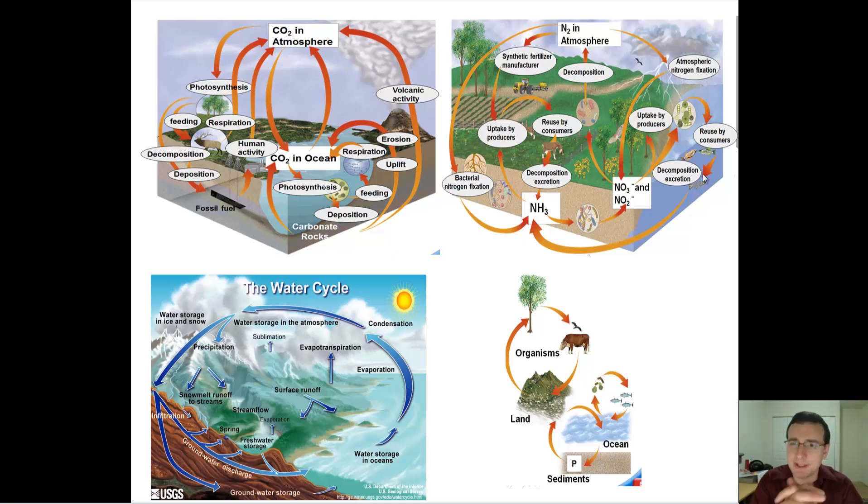Now, one biggest difference between all of these cycles is how fast the nutrients will cycle through these things. Just think about the nature of these areas where the nutrients were going. Remember, the nutrients will be going to the hydrosphere, the geosphere, the atmosphere, and the biological air, which is the biosphere.